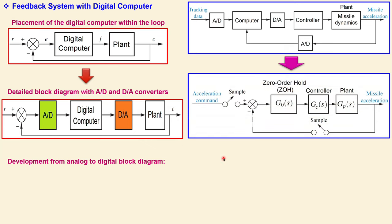Looking at the root locus and unit step response together for exactly k = 2.39 in MATLAB, we can see the pink dots are the poles on the unit circle, causing a sustained oscillation. The step response shows oscillation from 0 to 200 seconds — a pure sine-wave-like signal with discrete holding characteristics. This is the border between stable and unstable, confirming a marginally stable system at k = 2.39.